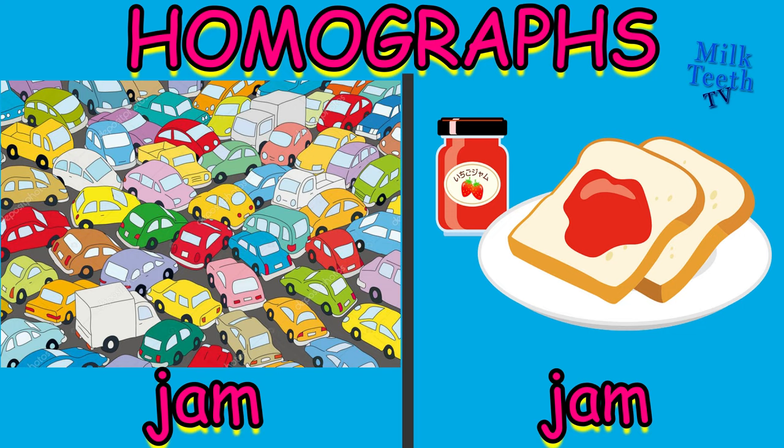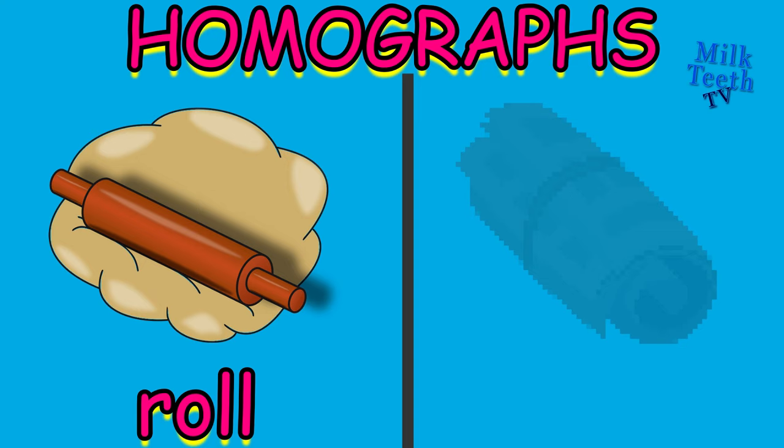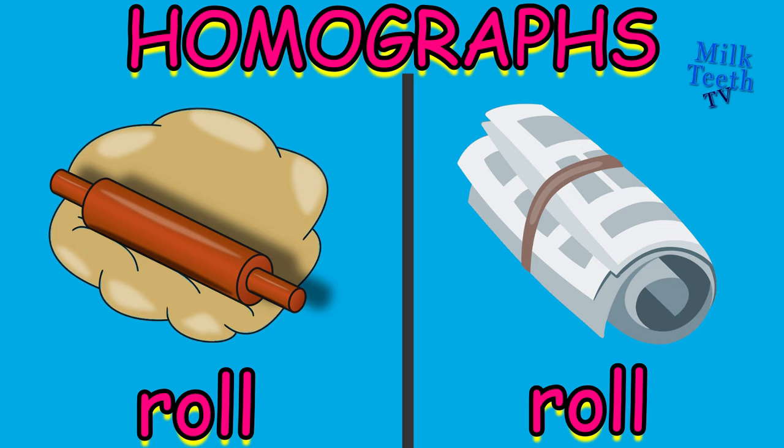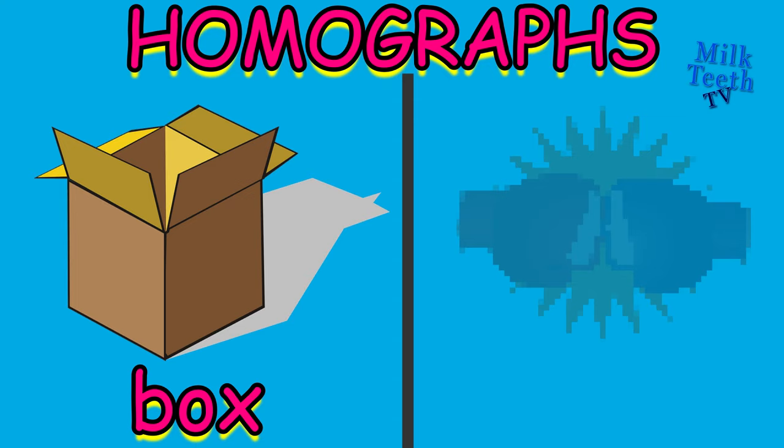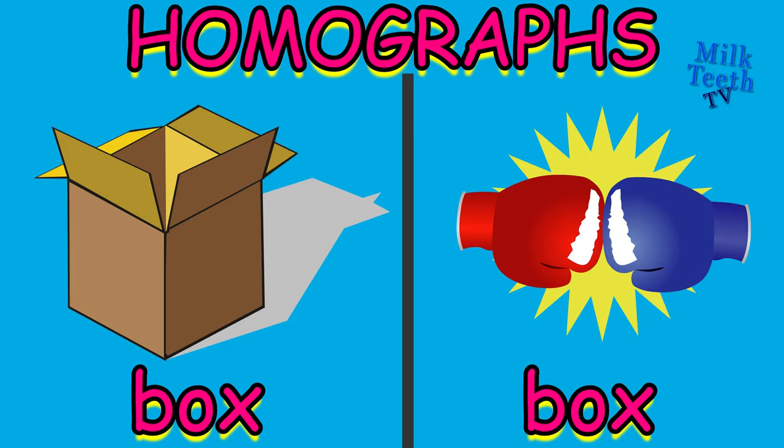Roll — the verb roll, to roll the dough. And roll — a roll of paper. Box — an object used to keep things inside. And box — a game of boxing, where we box.